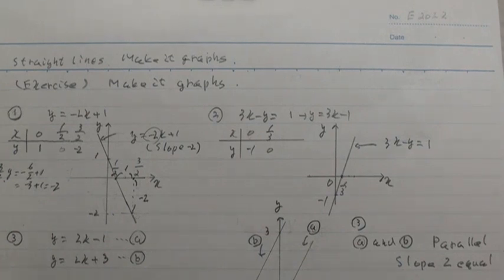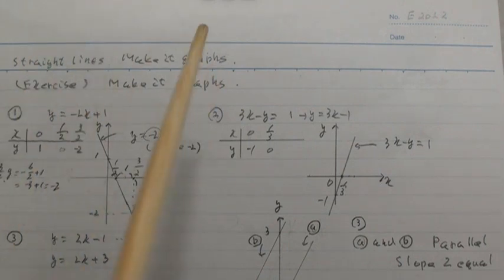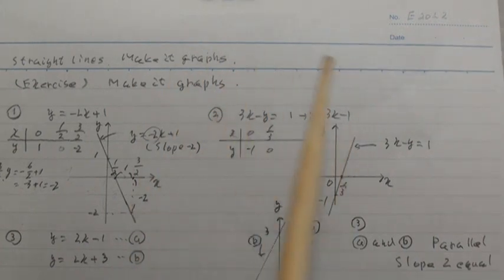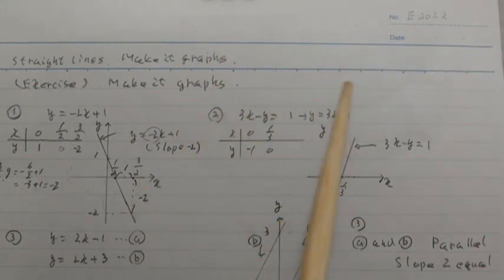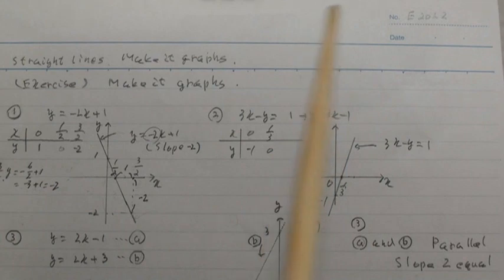And circle 2: 3x minus y equal 1. Rearranging both sides, erase y, then y equal 3x minus 1.